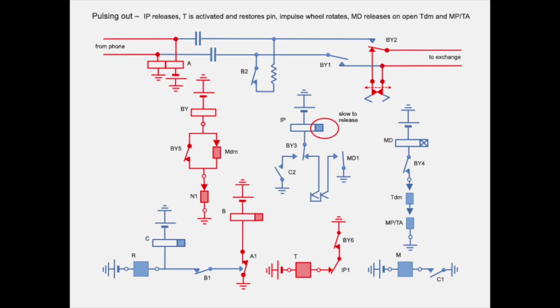By operating the tripping arm TA, this restores the marking pin to its home position. Relay MD operates only briefly because the loop is broken by contact TDM and the loss of metallic contact MP between the marking pin and the tripping arm. MD1 closes slowly and restores the loop for relay IP again.